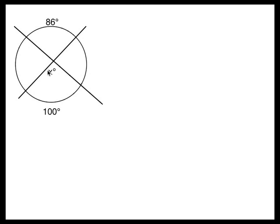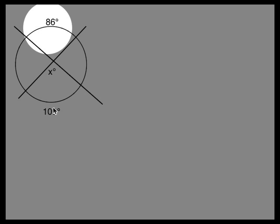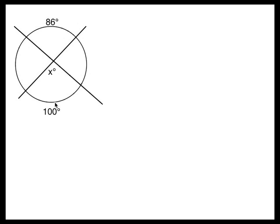Our first example gives us two secants that intersect to form angle X. Their intercepted arcs are 86 degrees and 100 degrees.